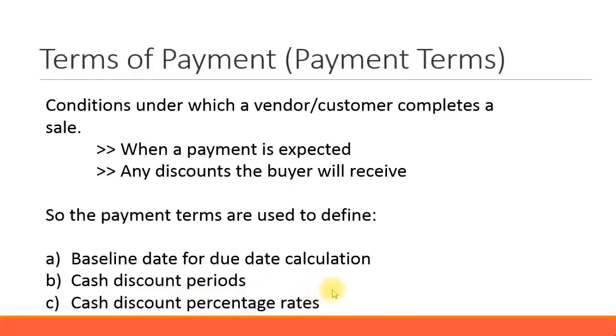It can have different cash discount periods. For example, if you pay within 15 days, you get 10% discount. If you pay within 30 days, you get 5% discount. Like that, you can have cash discount periods and you can assign a percentage for that.